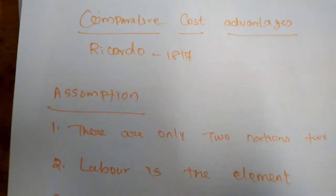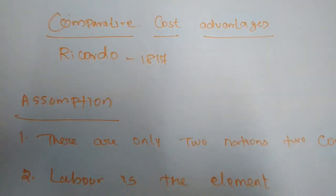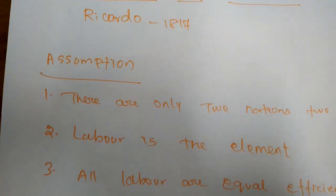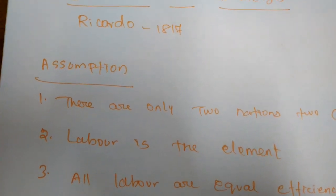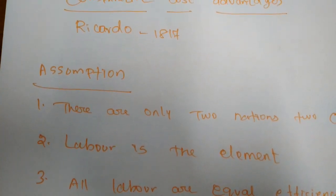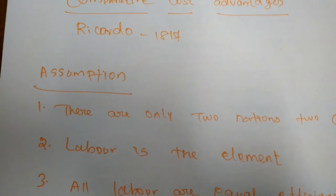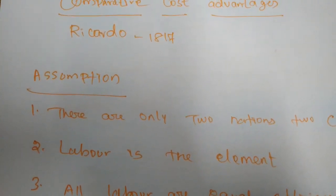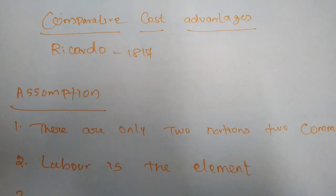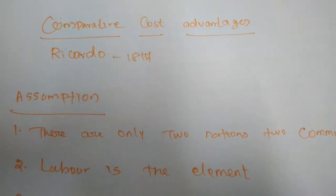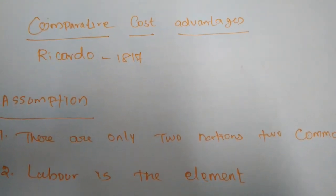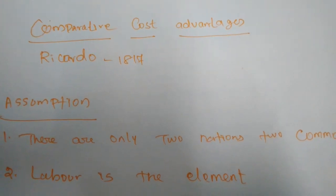Next is comparative cost advantage. The comparative cost advantage was developed by David Ricardo, a British economist, who published 'Principles of Political Economy and Taxation,' in which he formulated a systematic theory called the comparative cost theory. Ricardo demonstrated that the basis of trade is comparative cost differences — trade can take place even if absolute cost differences are absent, as long as there is a comparative cost difference.